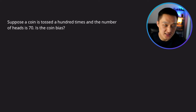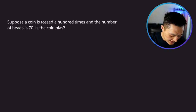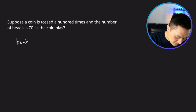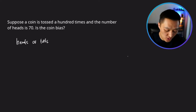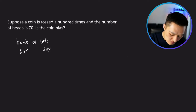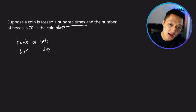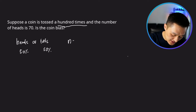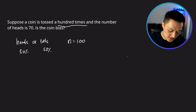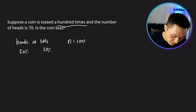Let's look at the key information provided. This is a coin toss with two potential outcomes: heads or tails. If the coin is unbiased, the probability of getting heads is 50% and the probability of getting tails is also 50%. The coin is tossed a hundred times, so the sample size is 100, and the number of heads is 70. So x equals 70.